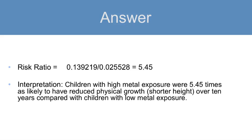The interpretation of this risk ratio is children with high metal exposures at age 5 were 5.45 times as likely to have decreased physical growth, or shorter height, over a 10-year period, compared with children with low metal exposure.